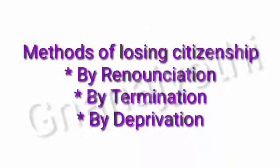Now let us view the methods of losing citizenship. First is by renunciation — if any Indian citizen gets citizenship of another country, they can voluntarily renounce the citizenship of India by a declaration through an application form to the registration office. Second is by termination — any citizen of India who secures citizenship of another country will have their Indian citizenship cancelled legally, without requiring an application form for registration.